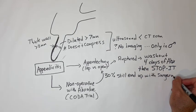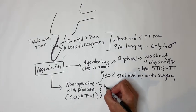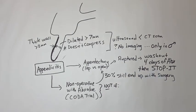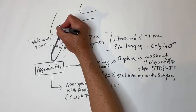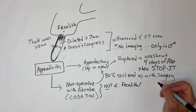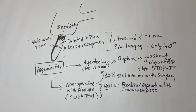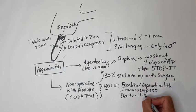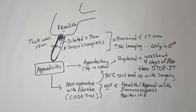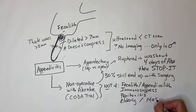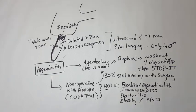A fecalith or appendicolith — calcified stool balls in the base of the appendix — immunosuppression, and peritoneal signs should be considered contraindications to trying non-operative treatment of acute appendicitis. Also consider appendectomy more in the elderly population or if there is any evidence of a mass on imaging, since cancer is more of a concern.